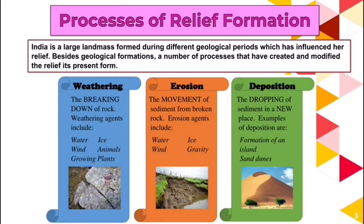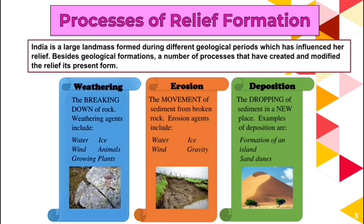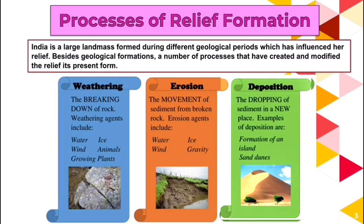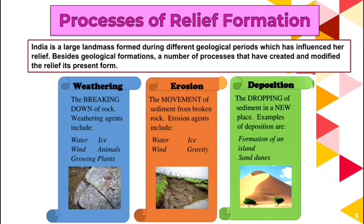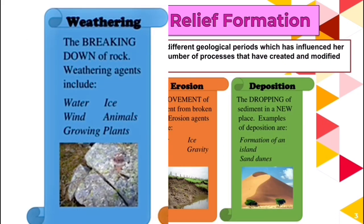We will first focus on how relief has been formed. Relief formation in any place basically depends upon three criteria. One is weathering, second is erosion, and third is deposition. When we talk about weathering, we basically discuss the breaking down of rocks. It can be because of wind, water, animals, ice, or growing plants.